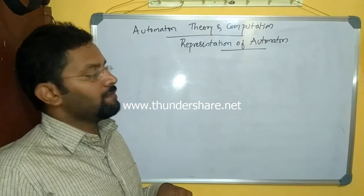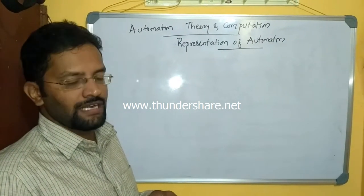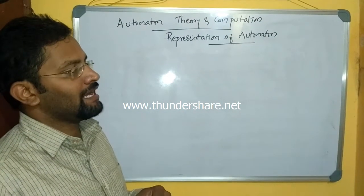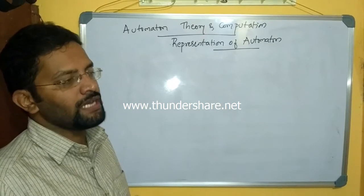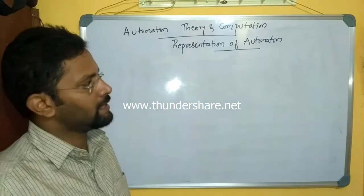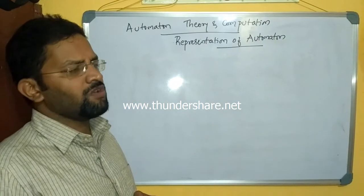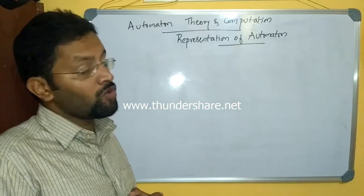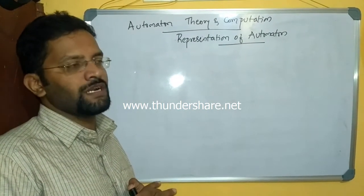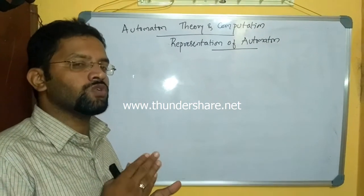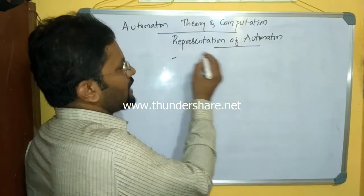In the previous sessions we discussed how to identify and start writing a finite state machine, where I mentioned there are five entities required to design an automata: state, input symbols, transition, initial state, and final state. Before designing an automata, let me explain how to represent it, since these automatas were designed before computers. In this session we discuss the representation of automata — there are two types: graphical representation and table representation.